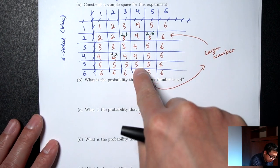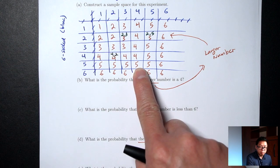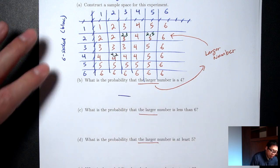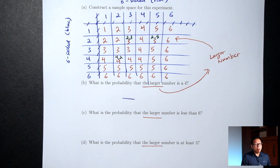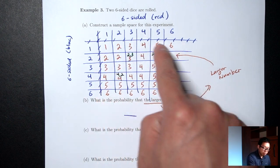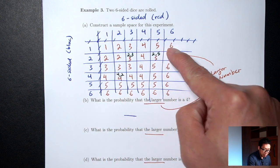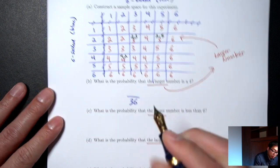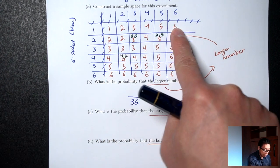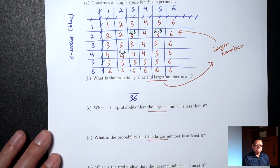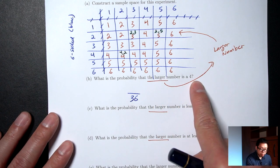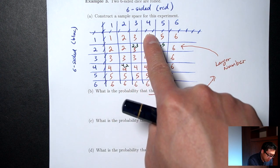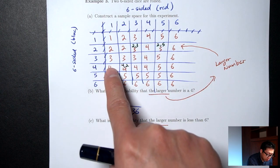Part B: What's the probability the larger number is 4? The bottom is the total number of inside boxes: 6 columns × 6 rows = 36. For the top, how many boxes have a larger number of 4? Counting those gives 7. So P(larger = 4) = 7/36.